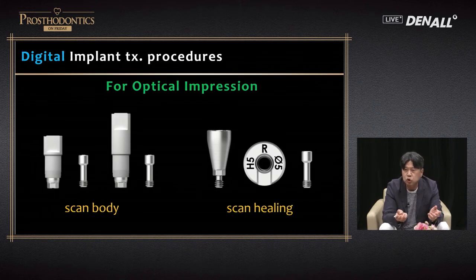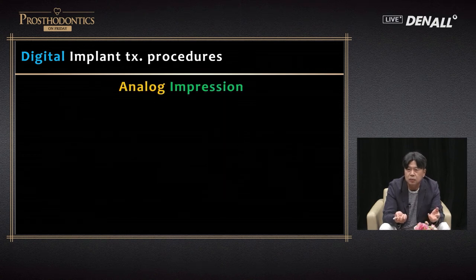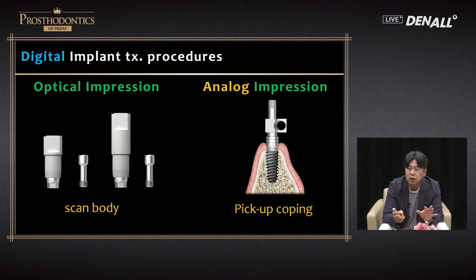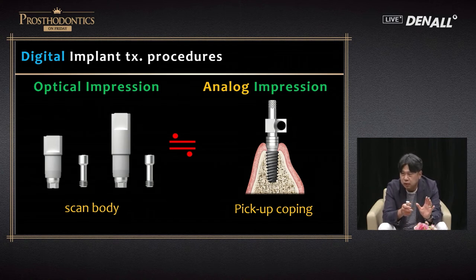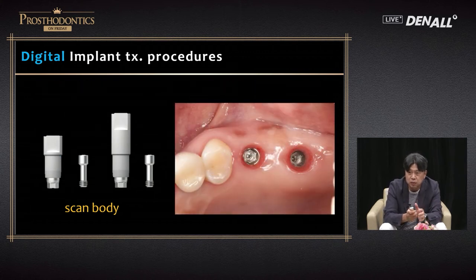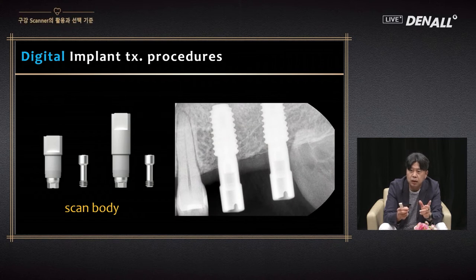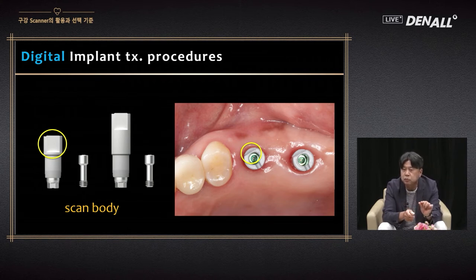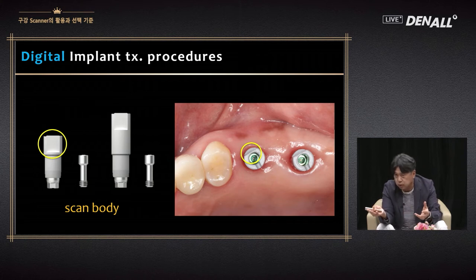Austin has two types: scan body and scan healing, analogous to pickup impression coping and transfer coping in analog — one for accurate impression and one for easier impression. For the scan body, the healing abutment is disconnected and scan body is connected. The periapical connection is checked on x-ray and scan can be acquired — only the D-cut part needs to be captured, not the bottom. Impression taking is completed very easily, with gingival margin and adjacent tooth included along with the D-cut.